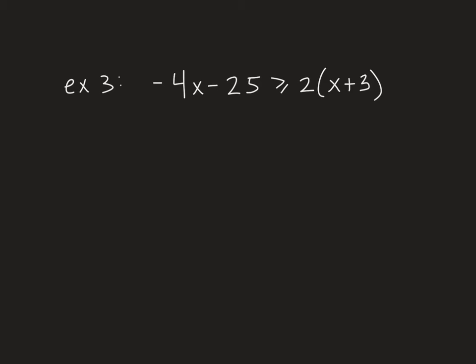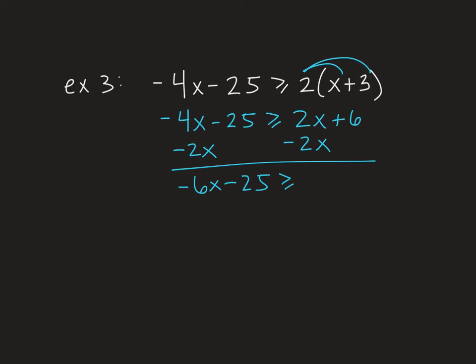This last example is basically just practice in some algebra. We're going to have the distributive property since there's parentheses, and we have a variable on both sides, so it's just a slightly more difficult algebraic exercise. First, we'll distribute the 2. Then we want to get all of our x's onto the left hand side. You could get them all onto the right if you wanted, but I just prefer to have the variable on the left. We will have negative 6x minus 25 is greater than or equal to 6. Then if we add 25 to both sides...